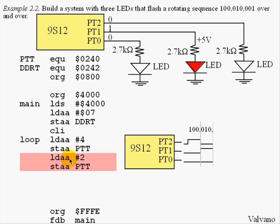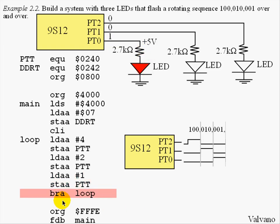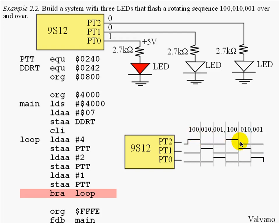The next two instructions will set the pattern 010 causing the second LED to come on, and the following two instructions will set the pattern 001 causing the last LED to come on. The unconditional branch back up to the loop will cause the LOAD, STORE, LOAD, STORE, LOAD, STORE instructions to be executed over and over again, creating the regular pattern as desired.